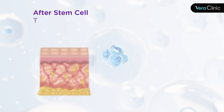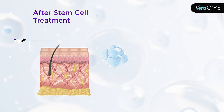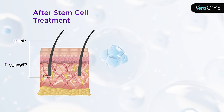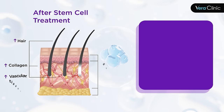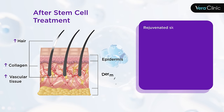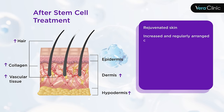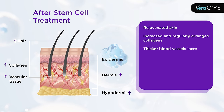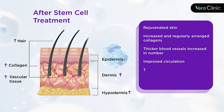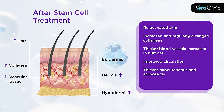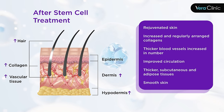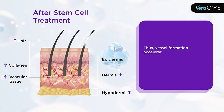After Stem Cell Treatment: Rejuvenated skin with increased and regularly arranged collagens, thicker blood vessels increased in number, improved circulation, thicker subcutaneous adipose tissues, and smooth skin.